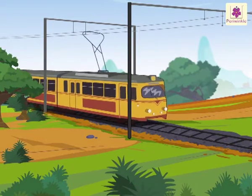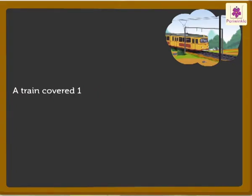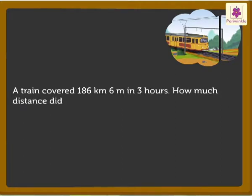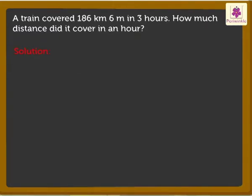Look at the train. It covered 186 kilometers 6 meters in 3 hours. How much distance did it cover in an hour? Here, we would first carry out the division of kilometers and then meters. So, let's divide 186 kilometers 6 meters by 3 to get the answer.